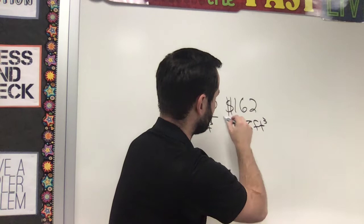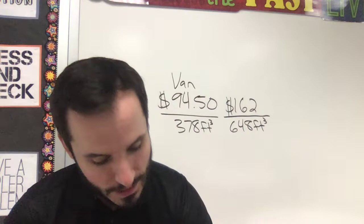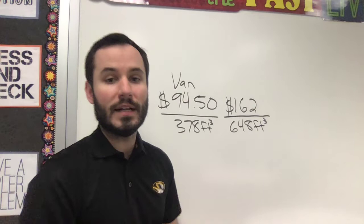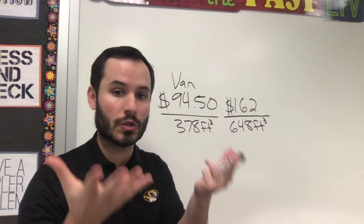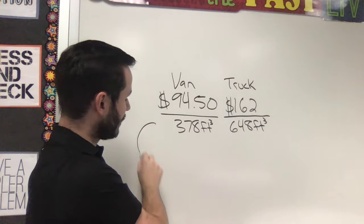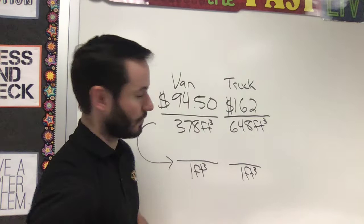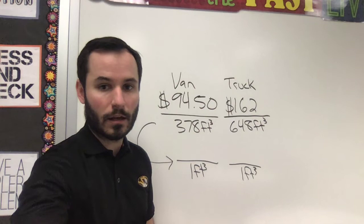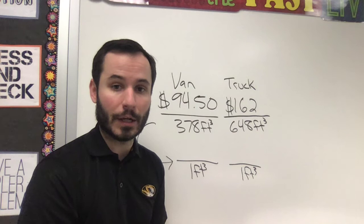That's what you're actually getting for those prices. You're paying $94.50 for 378 cubic feet of space, but over here you're getting almost double the space for more money. The question is asking which is the better deal. To find the better deal, we need to find how much one cubic foot costs. It's hard to compare 378 and 648 directly because they're different numbers — we need to make both of them look the same by finding the cost per one cubic foot.